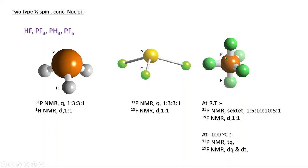Now consider PF5, phosphorus pentafluoride, which is a fluxional type molecule. Fluxionality means these bonds are interchangeable at room temperature — the equatorial bonds can become axial and the axial bonds can become equatorial. This is called fluxional behavior, also related to Berry pseudo-rotation. At room temperature, all five fluorines are equivalent due to fluxionality, so for phosphorus we get a sextet, and for the five equivalent fluorines we get a doublet.